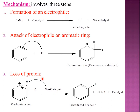The carbonium ion is unstable and undergoes loss of proton. The nucleophile-catalyst complex released from step one abstracts the proton (H+). The bond between carbon and hydrogen shifts between carbon and carbon to stabilize the positive charge, finally forming substituted benzene. The catalyst is regenerated — its role is simply to increase the rate of the chemical reaction.